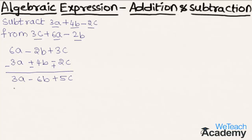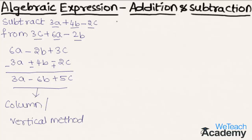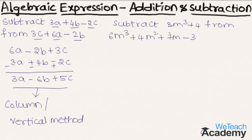So we call this method the column or vertical method. Now let us consider another example: subtract 3m³ plus 4 from 6m³ plus 4m² plus 7m minus 3. Here we have to subtract the first expression from the second expression. By subtracting we get 6m³ plus 4m² plus 7m minus 3, minus of 3m³ plus 4.